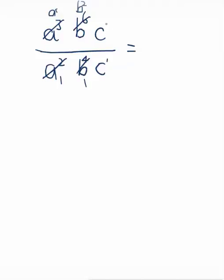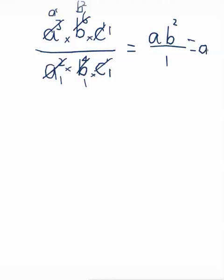For c, we have a power of 1 on top and a power of 1 on the bottom — take away 1 from each and they're gone, becoming a 1. So the bottom is 1 times 1 times 1, which is just 1. On top I'm left with a to the power of 1 — just a — and b to the power of 2. The c's have become 1. To write the final answer properly: a·b squared, where the 1 on the bottom is invisible.